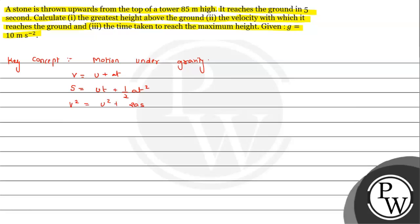Instead of 'a' we will replace it with 'g', and we need to follow the sign convention: upward direction will be considered negative, because these are vector terms. Here, v is the final velocity, u is the initial velocity, a is acceleration, t is time, and s is displacement.